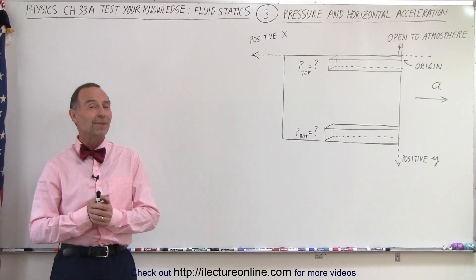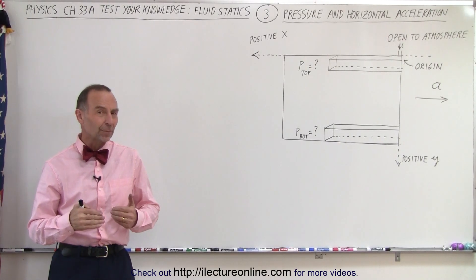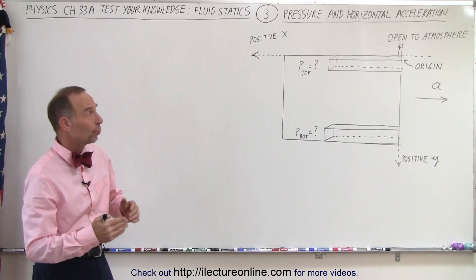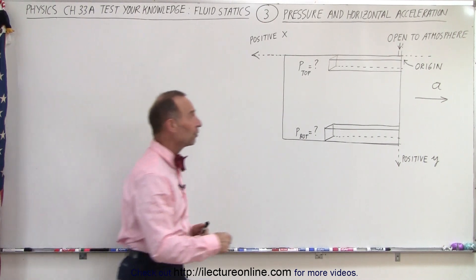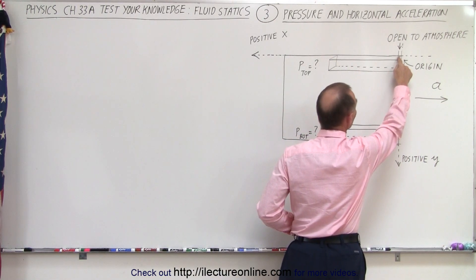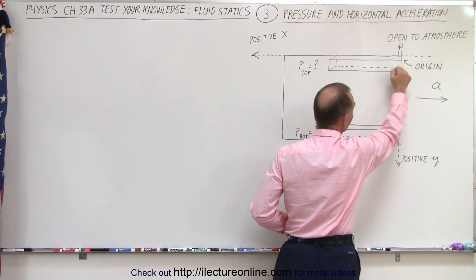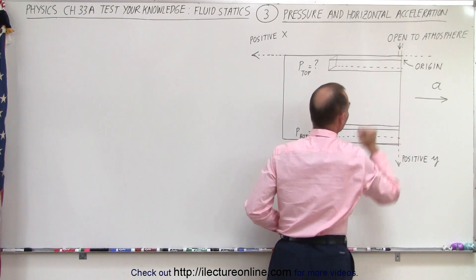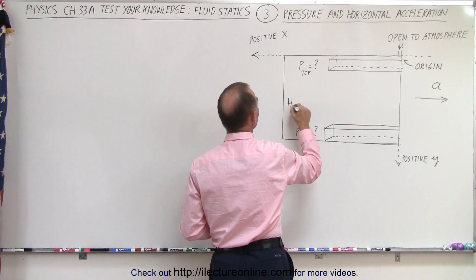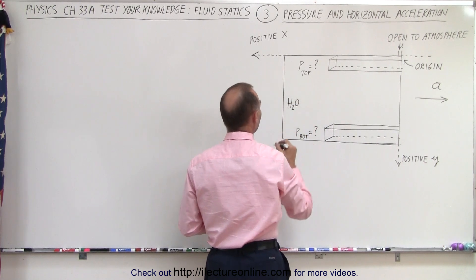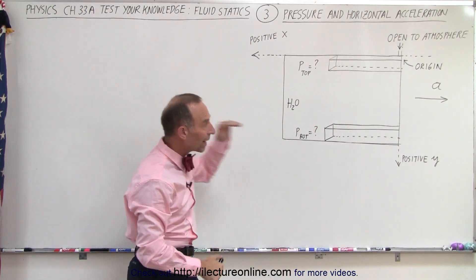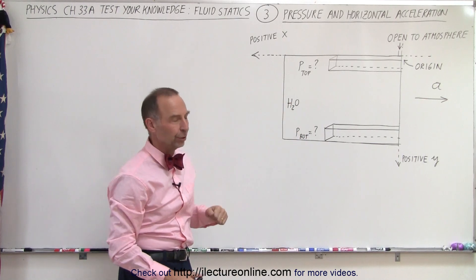Welcome to ElectronLine. We're going to do something a little bit different. We have a tank that's filled with water, with a small opening at the very top right corner that's open to the atmosphere, so the liquid is all the way to the very top. The liquid is water, H2O. In this case, the tank is accelerating to the right instead of downward.